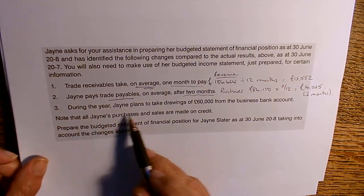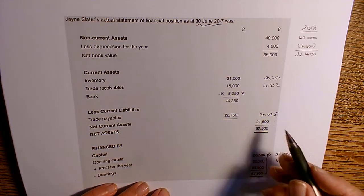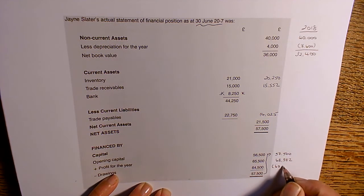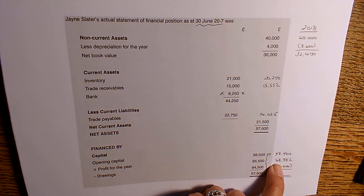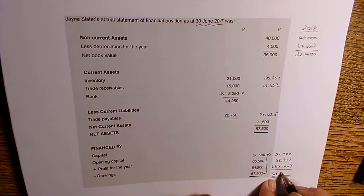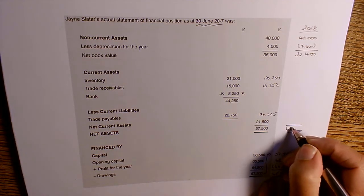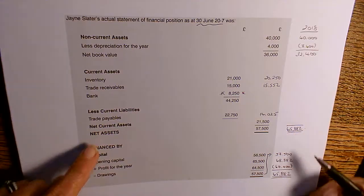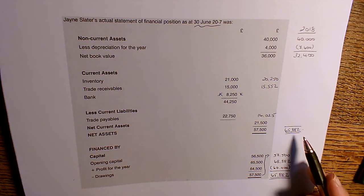Jane plans to take drawings of £60,000 from the business bank account, which comes off at the bottom of the statement of financial position. Adding £57,500 opening capital, plus profit for the year, and deducting drawings, means our statement of financial position needs to balance at £65,882. The net assets and closing capital at the end of the year both need to be £65,882.